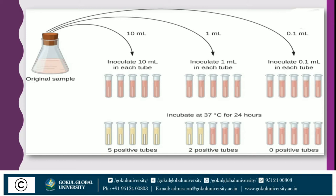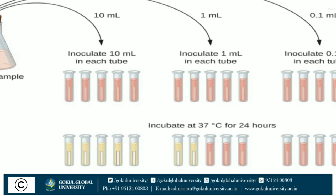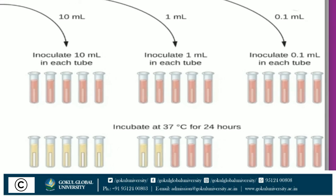We require the original sample — milk, water, or food; here we take milk sample. Then we require 15 tubes of MLBB medium. What is the full form of MLBB? MacConkey Lactose Bile Broth. Each 15 tubes are divided into 3 groups — one group contains 5, another group contains another 5, and the third group contains 5 tubes. The MLBB medium has a particular color because it contains a particular indicator dye, and it also contains a Durham vial.